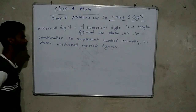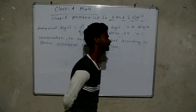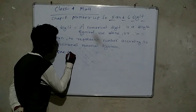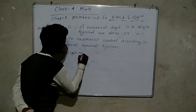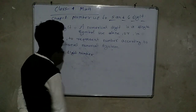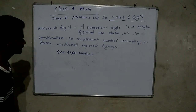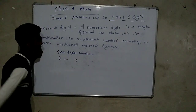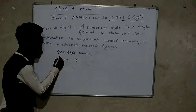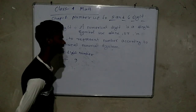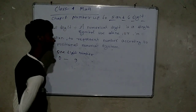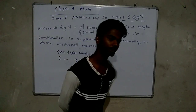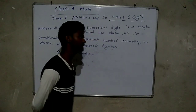How can we write numbers? A one-digit number includes: 0, 1, 2, 3, 5, 6.